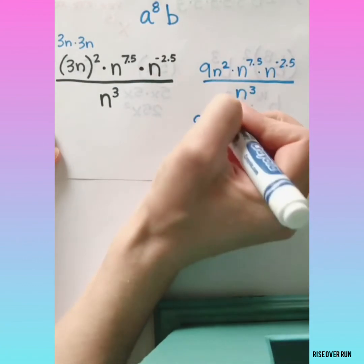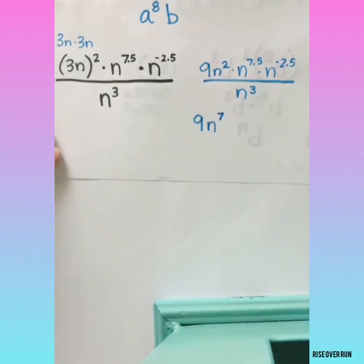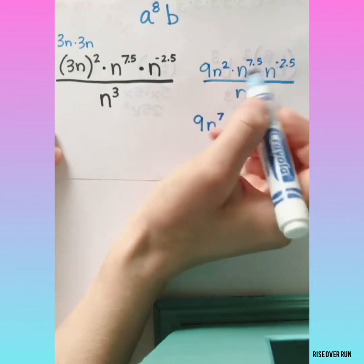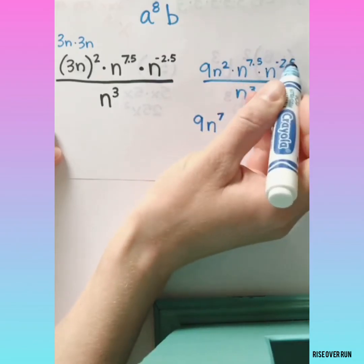Minus 2.5 is 7. We subtracted there because that's a negative, but technically we're still adding these exponents together.